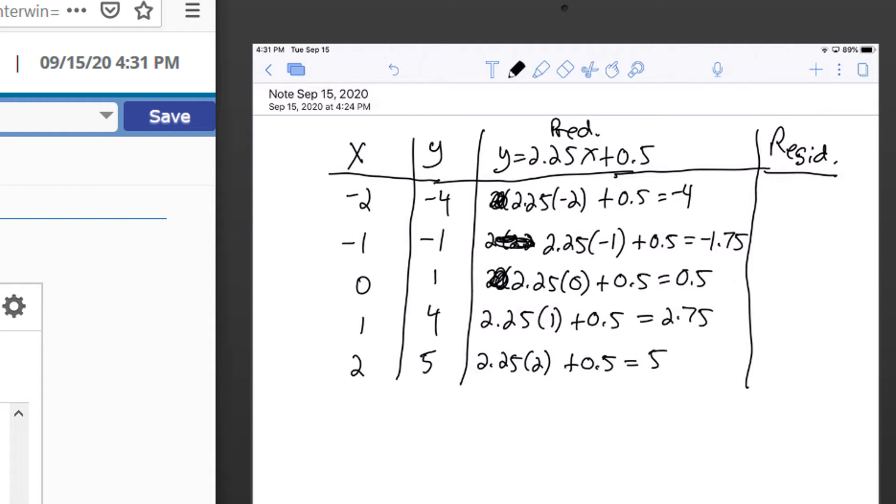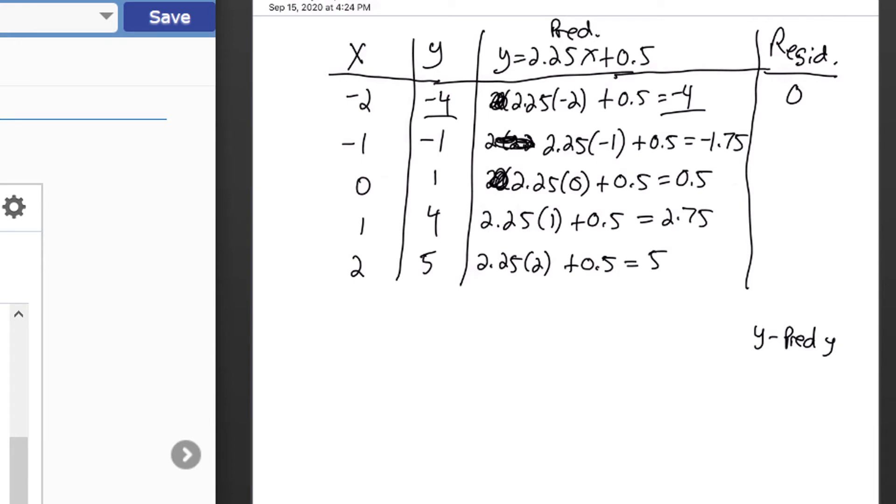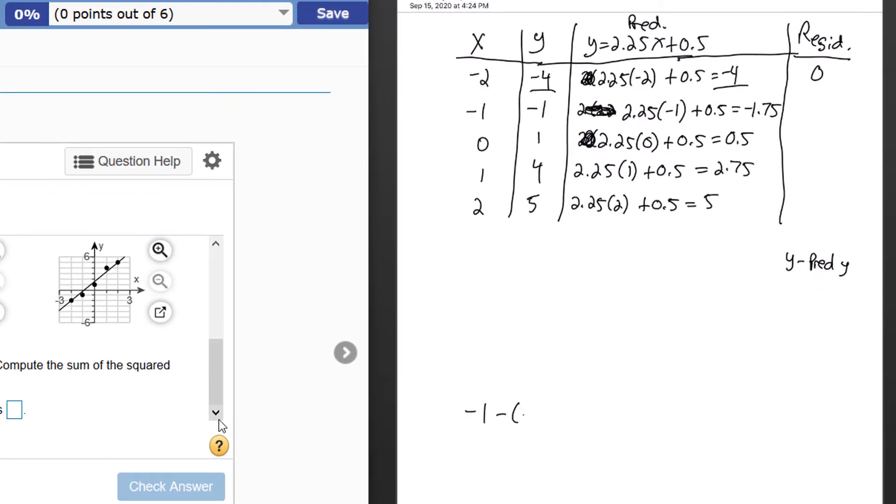The residual is simply the actual value minus the predicted value, so I'm going to subtract the y value minus the predicted value for y. In the first row, negative four minus negative four, that's zero. Negative one minus negative 1.75 is the same as negative one plus 1.75, and that equals 0.75. The actual value was 0.75 above where we expected it. For the next row, I'm going to subtract one minus 0.5, that is 0.5. Next, I'm going to subtract four minus 2.75, that is 1.25. And then finally, the last row is 0.